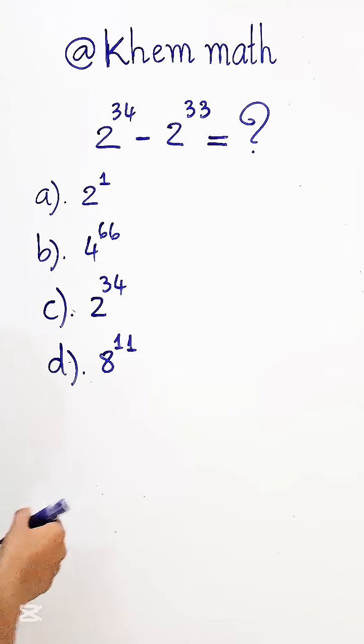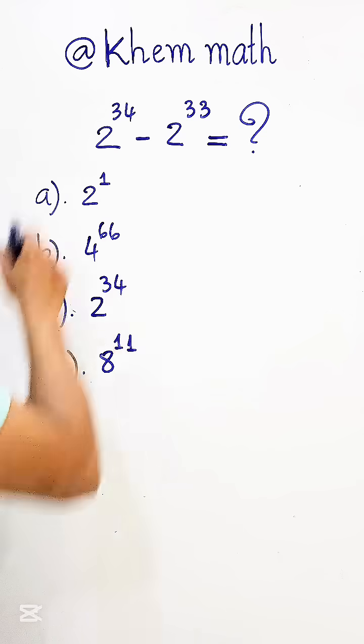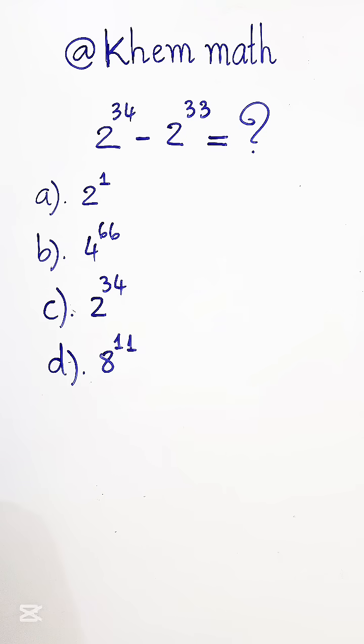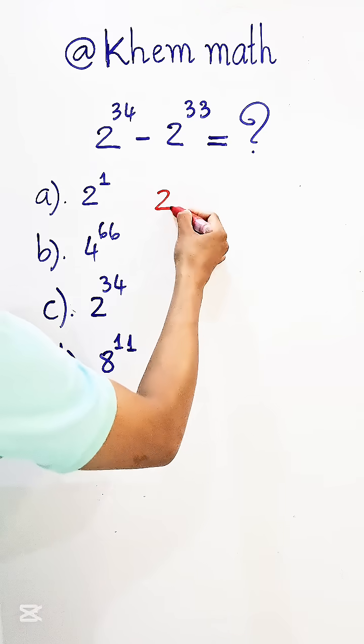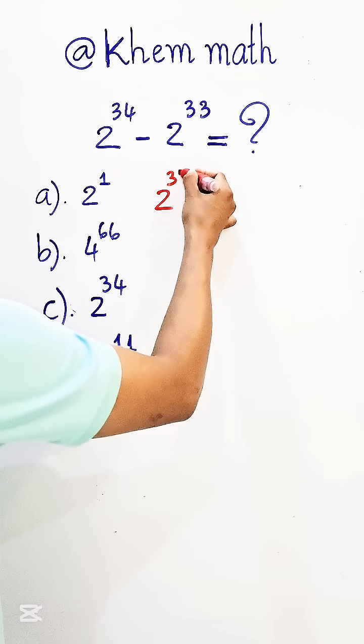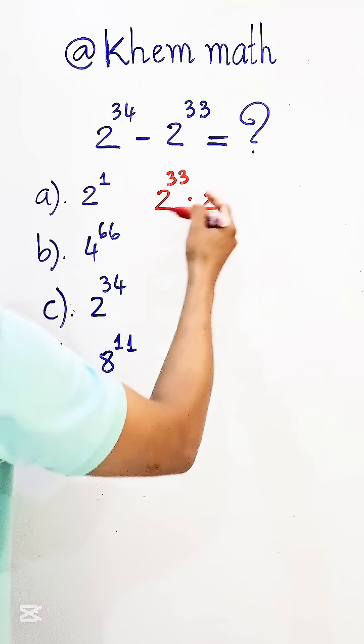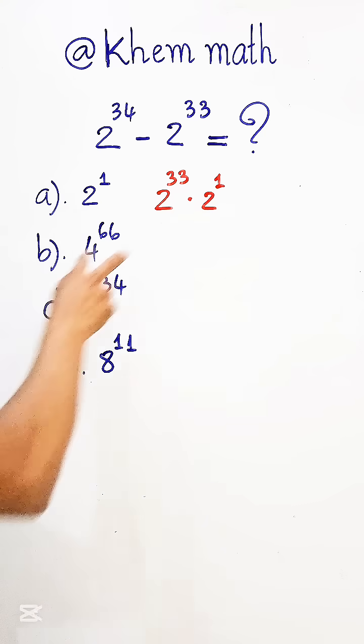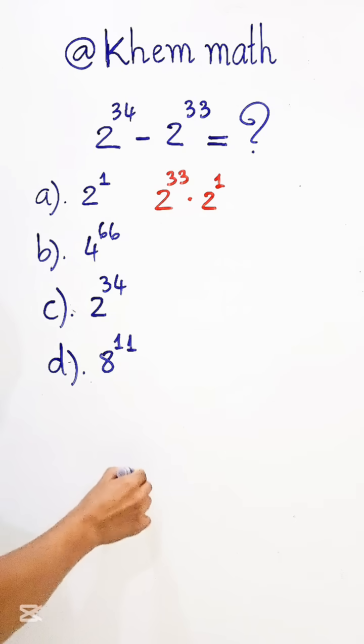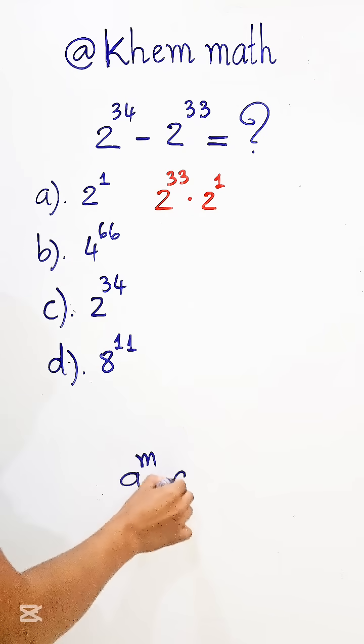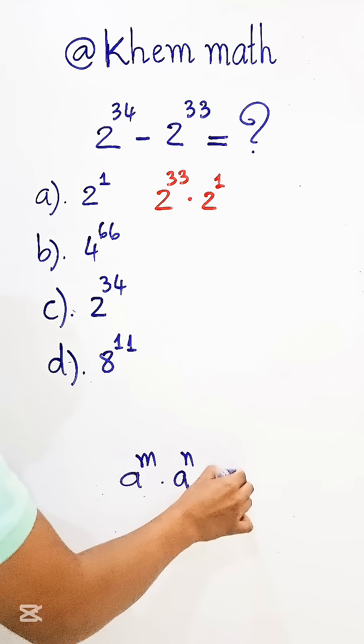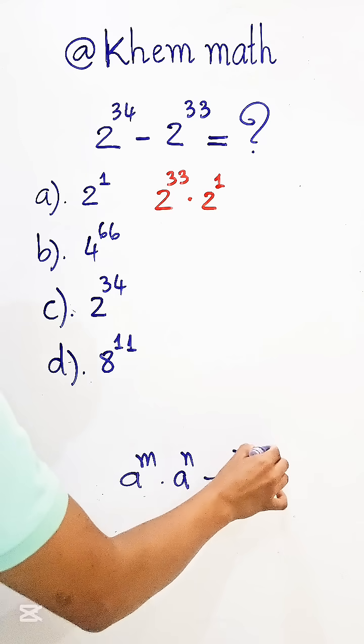Okay, the first step: look, there is 2 to the power 34. Now, this I can write as 2 to the power 33 times 2 to the power 1. So here we use the formula: if a to the power m times a to the power n equals a to the power m plus n.